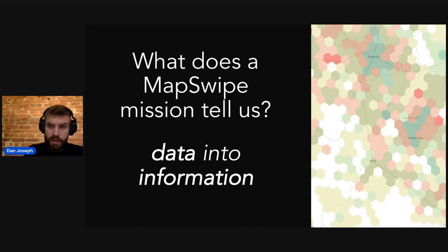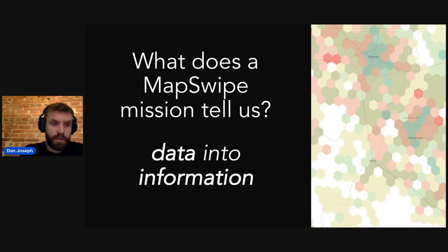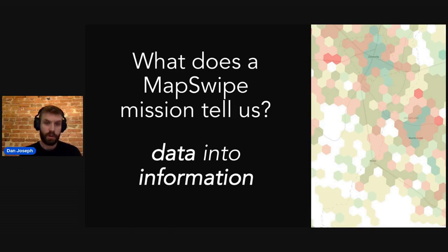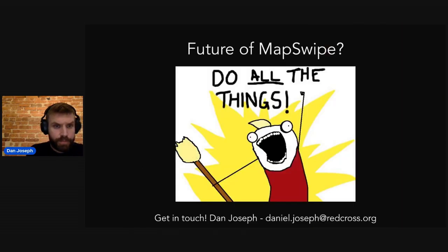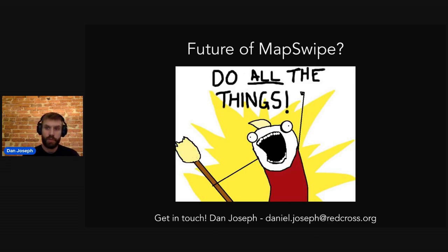So what does a MapSwipe mission tell us? We're really interested in how we can turn this data into information. What actions can we take based on this data? Can we target places for repeat mapping? Can we feed this into some sort of analysis? For the future of MapSwipe, we're looking into how we can dig deeper into those data pipelines — how do we get from this crowdsourced data to actions?